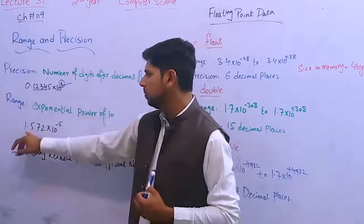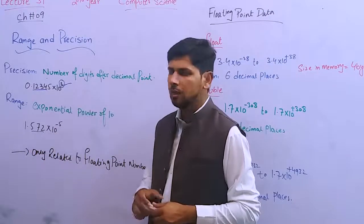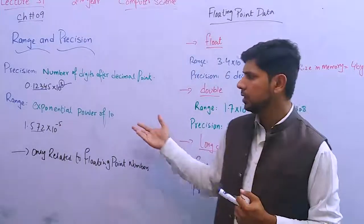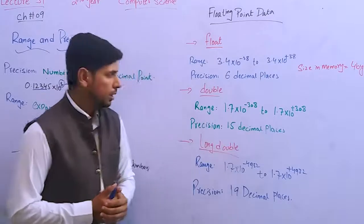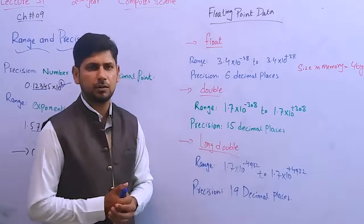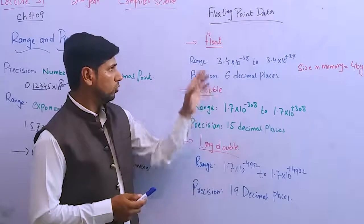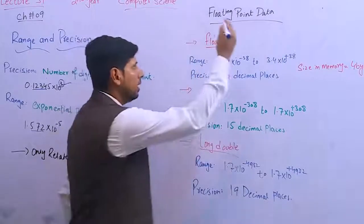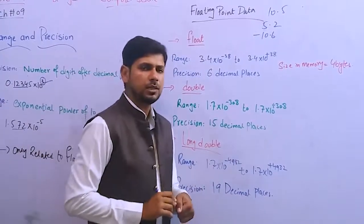For example, 1.72 into 10 to the power minus 5 has three values on the right side, and that's the range. So range and precision are different concepts for integer and floating point data. Float data or floating point data numbers include fractional values like 10.5, 5.2, minus 10.6 - both negative and positive values.